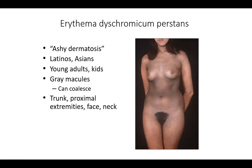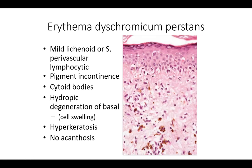Erythema dyschromicum perstans, also known as ashy dermatosis, is found in Latinos and Asians as well as young adults and kids. Gray macules coalesce into larger plaques on the trunk, proximal extremities, face, and neck. Histologically, it can present with mild basal to lichenoid vacuolar interface change that can be quite subtle. You want to see mild lichenoid or superficial perivascular lymphocytic inflammation, pigment incontinence, cytoid bodies, hydropic degeneration of the basal layer, and possible overlying hyperkeratosis.